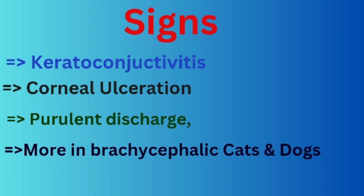Now the next segment covers signs and symptoms. Clinically, we can observe that the eye is unable to completely open. Other symptoms include keratoconjunctivitis — an inflammatory process involving both the conjunctiva and the superficial cornea. Next is corneal ulceration, where ulcerations form on the cornea. We can also observe purulent discharge — thick, milky discharge coming from the eyes. These signs are more common in brachycephalic cats and dogs.